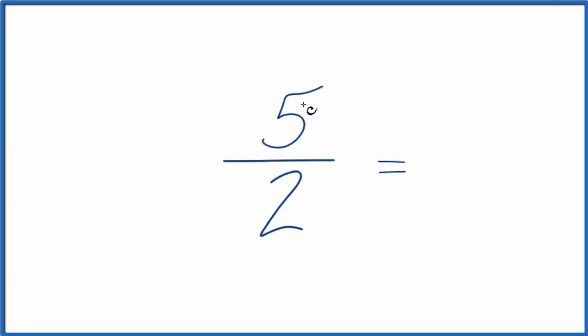Let's convert the improper fraction 5 over 2 to a mixed fraction. We'll look at two ways to do it.